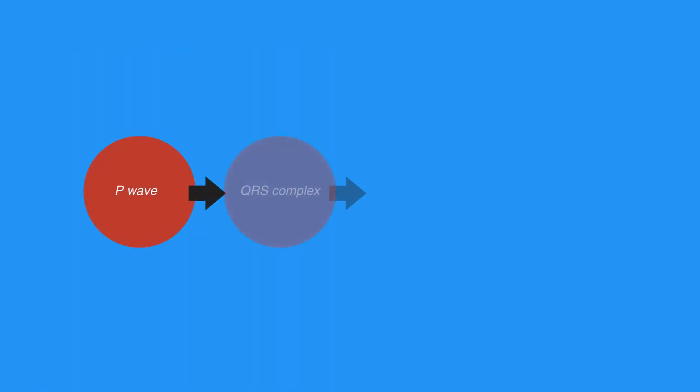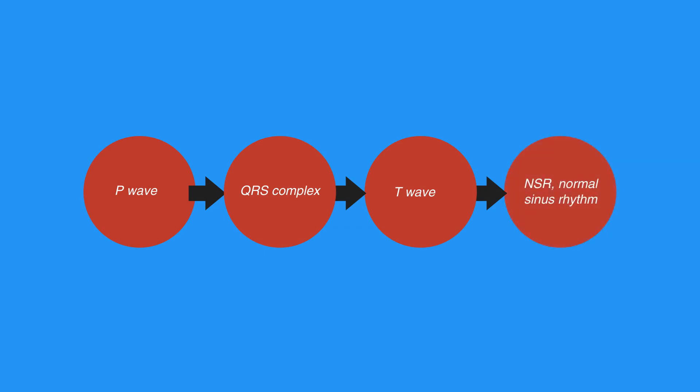The P wave, QRS complex, and the T wave together at proper intervals are indicative of normal sinus rhythm, or NSR.